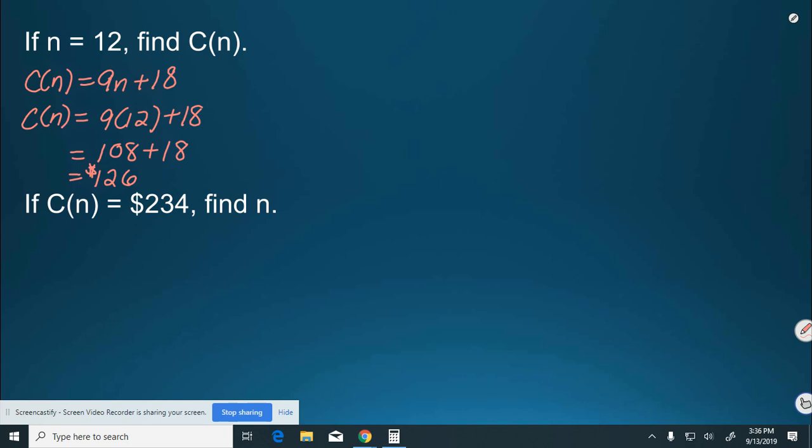And then, if C(n) is 234, find n. Now I'm going to take the 234 and substitute it for C(n). So, 234 equals 9n plus 18. Subtract the 18.